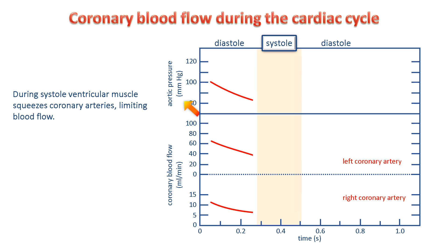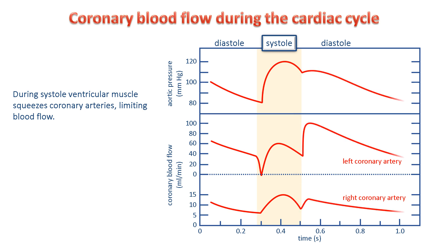This can be seen in the middle trace. At the onset of systole, as the ventricular muscle contracts and occludes the arteries, the blood flow drops to zero. As systole progresses, there is an increase in coronary artery flow as the rising aortic pressure forces blood through. But as systole ends and the ventricle relaxes, there is a dramatic rise in blood flow as the vessels open to reinstate the flow of blood in the coronary circulation.